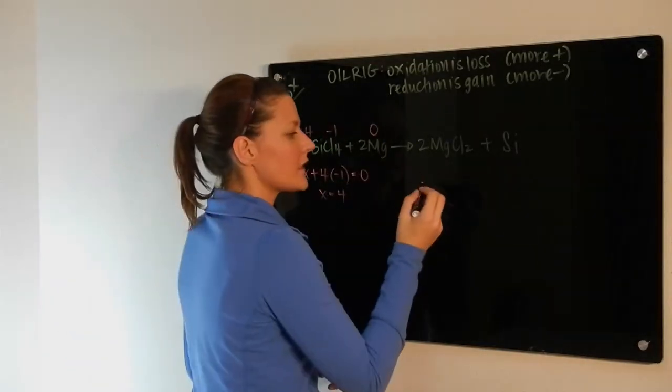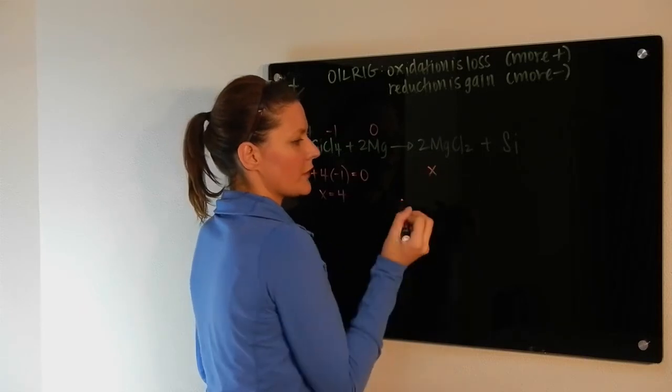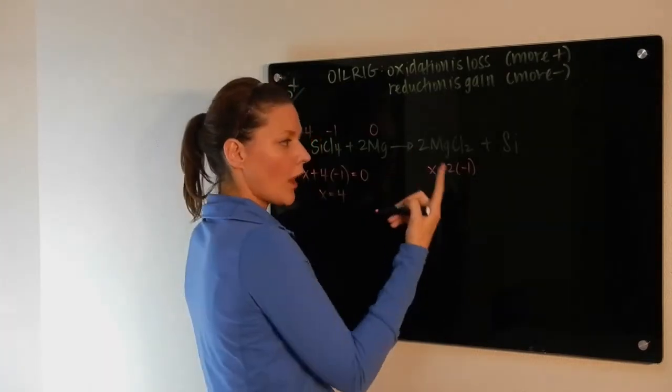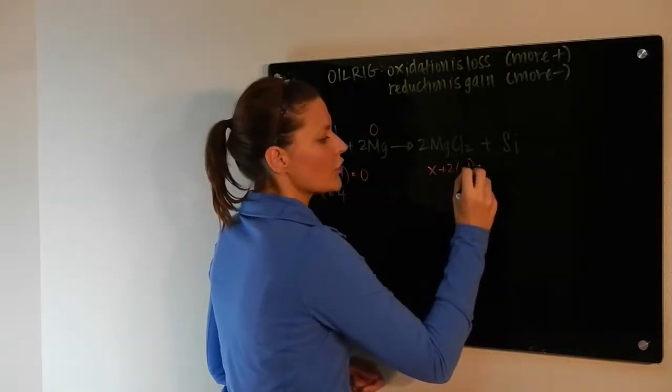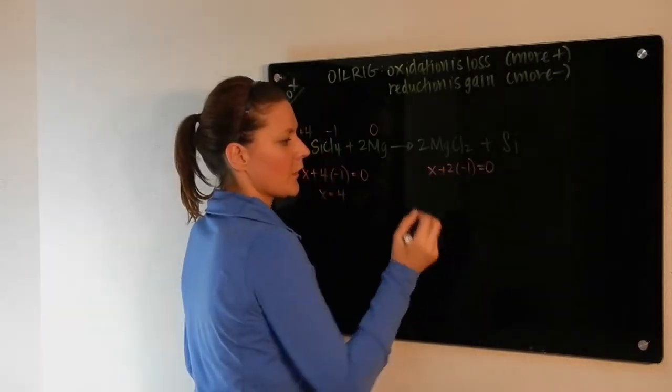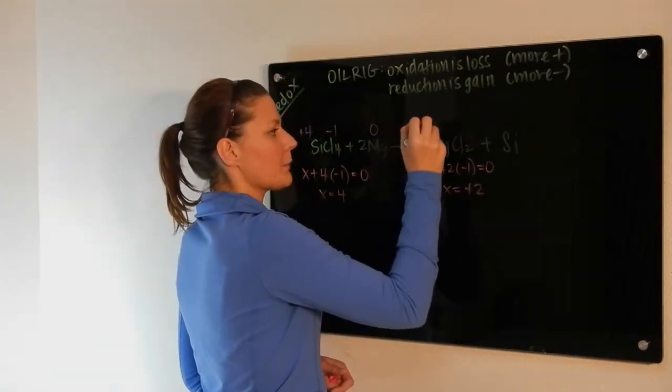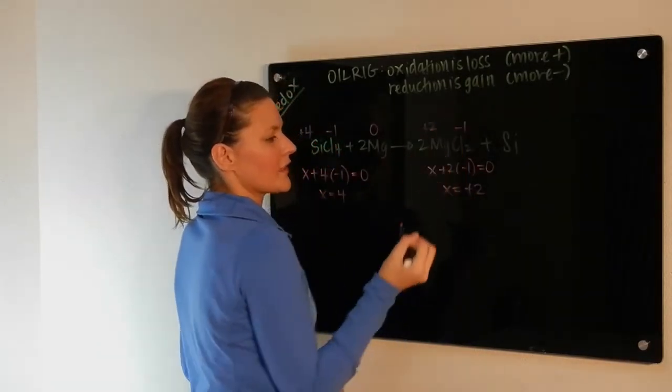Further down, we see magnesium again. We don't have a specific rule for it. We have two chlorines, each with a negative one. The compound, once again, is neutral, so they would have to sum to zero. You solve for X and you get plus two. So magnesium is plus two, and chlorine is minus one.